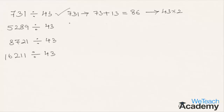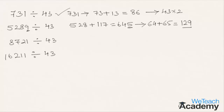The next number is 5289. According to the concept, adding 13 times the last digit to the remaining number: 528 plus 9 times 13 gives 528 plus 117, which equals 645. Repeating the concept: 64 plus 5 times 13 gives 64 plus 65, which equals 129. Since 129 is exactly divisible by 43 (43 times 3), the given number is divisible by 43.